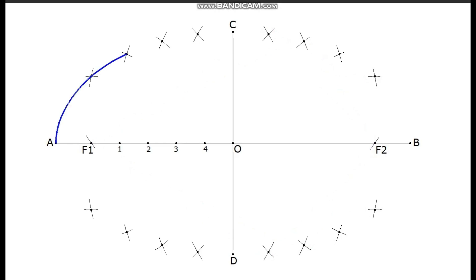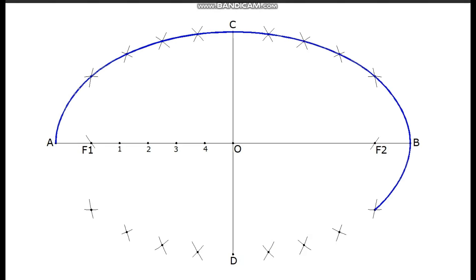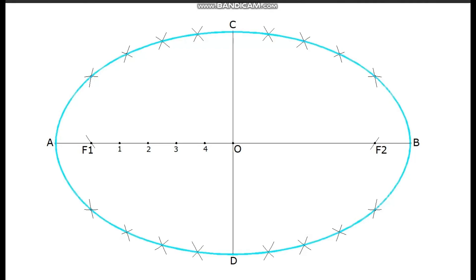Now, join all these points produced by the intersection of arcs by a smooth curve. This is the ellipse.